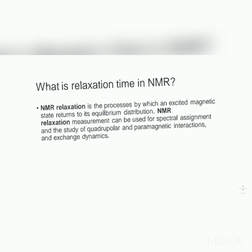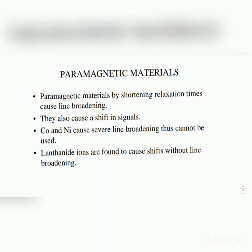Paramagnetic materials, by shortening relaxation time, cause line broadening. The line broadening in paramagnetic materials is high. They also cause a shift in signals. Cobalt and nickel cause severe line broadening and thus cannot be used. Lanthanide ions are found to cause shift without line broadening.